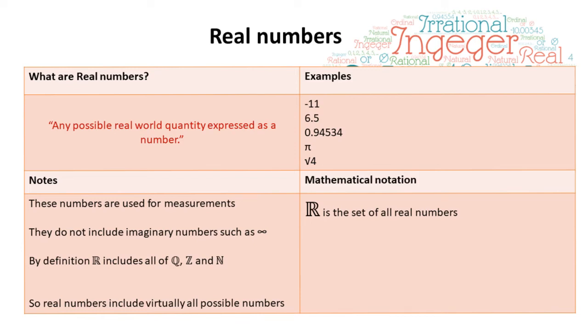The mathematical notation for the set of real numbers is R. This is almost all virtually possible numbers. So by definition, the set R encompasses the sets Q, Z, and N. The only thing it doesn't include is some imaginary numbers we use in mathematics, such as, for example, infinity.